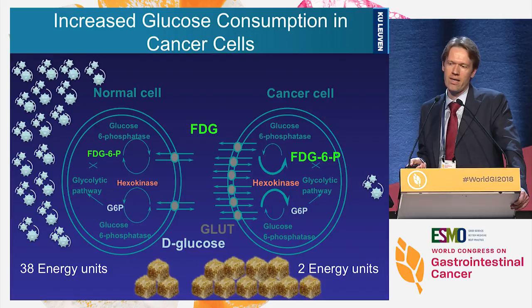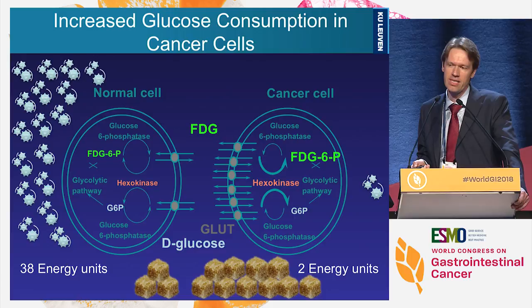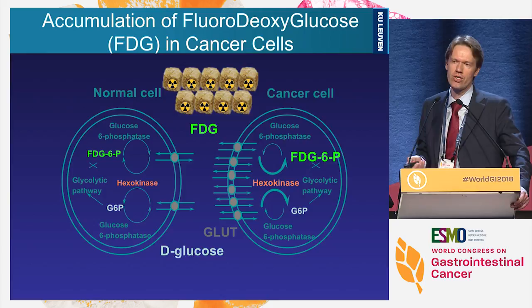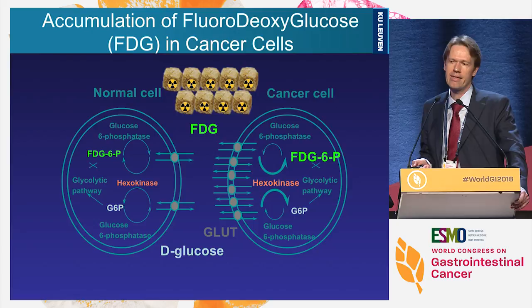Normal cells are quite parsimonious with sugar and extract a lot of energy from one glucose molecule. But cancer cells have increased glycolysis, marked by overexpression of GLUT transporters and hexokinase activity, so they extract much less ATP from each glucose unit. They consume much more glucose, resulting in accumulation of FDG in cancer cells at much higher concentrations than in normal cells — hence the detection of living cancer cells with positron emission tomography.